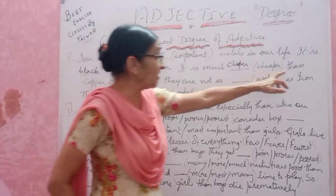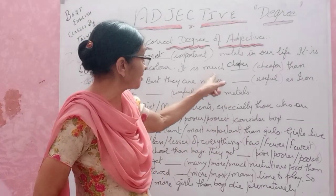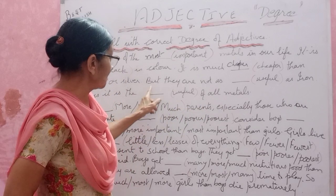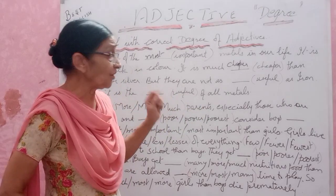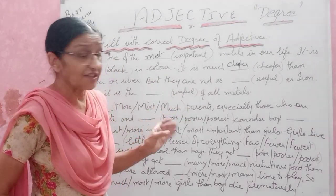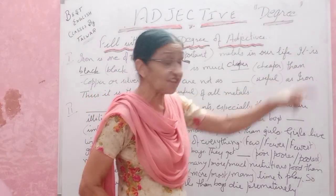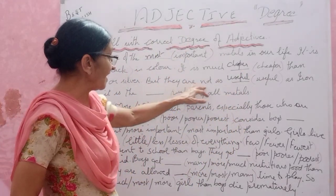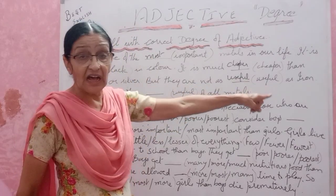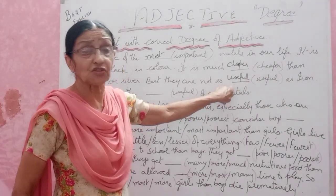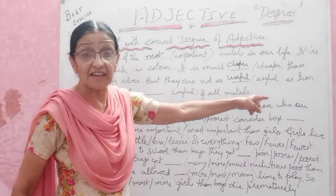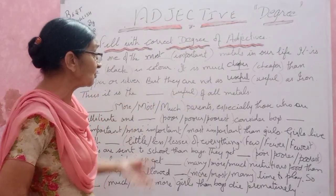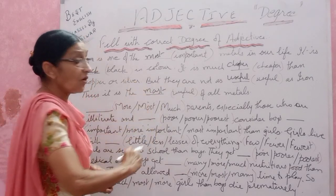Copper and silver are not as useful as iron. Since this is comparing using 'as...as', we just put 'useful' in the positive degree: they are not as useful as iron. Then the next part: 'the' is given and 'of all matters' follows, so we use the superlative — 'most useful of all matters'.